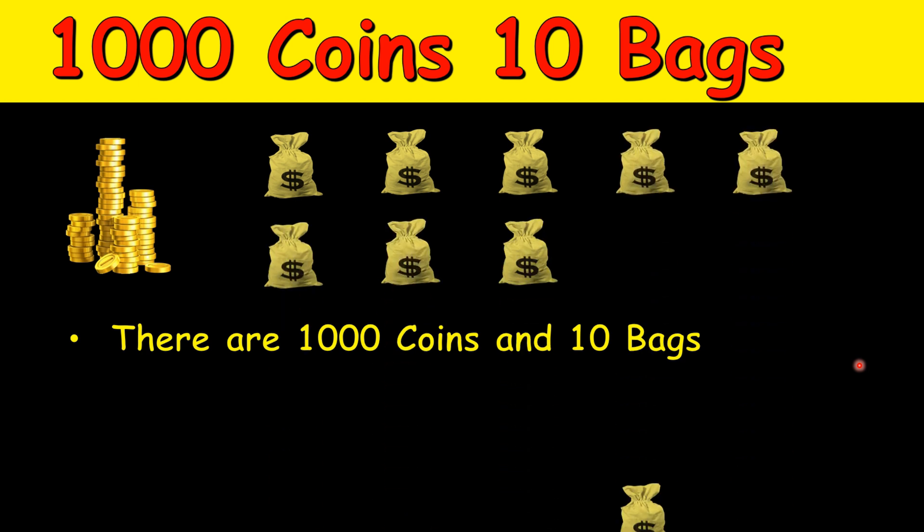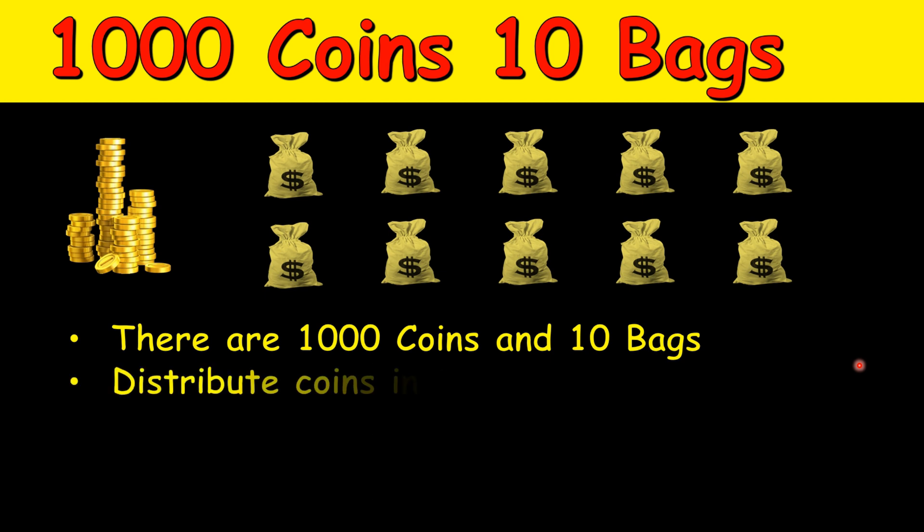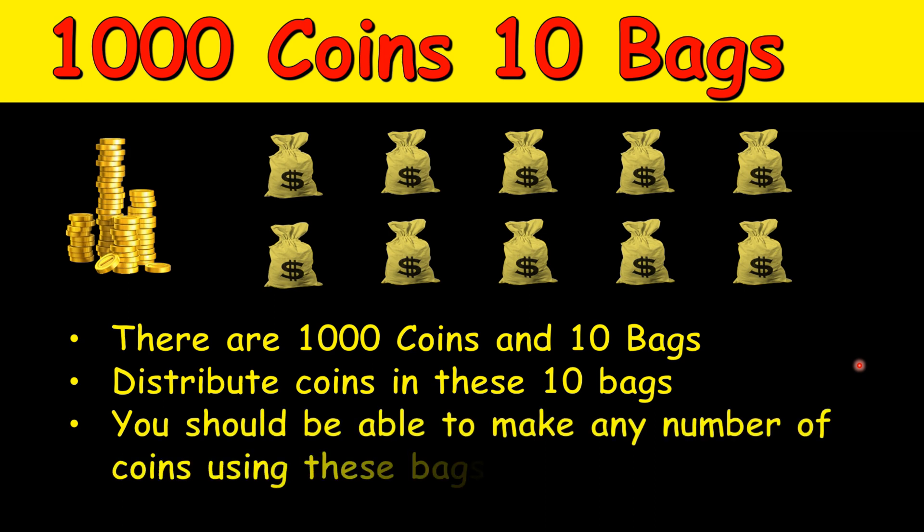We have to distribute these 1000 coins into 10 bags, and the goal is that using these bags, you should be able to make any number of coins. So we have 1000 coins. If somebody asks you for some coins, let's say 30 coins, then you will give them 30 coins. But now instead of loose coins, you have them in groups, in 10 bags.